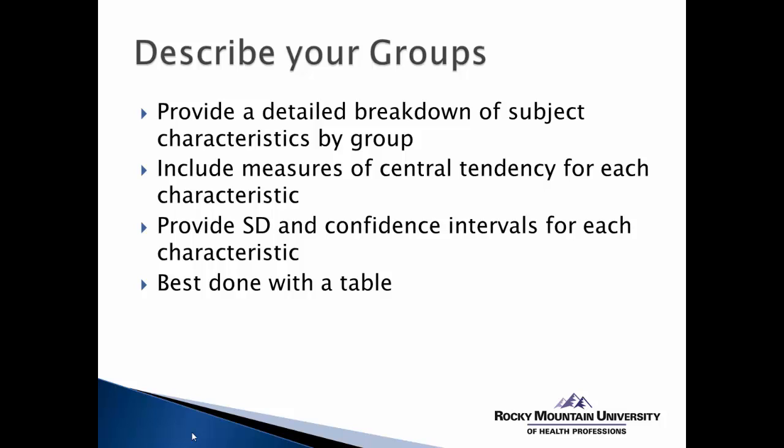For example, for age, that would probably be the mean or maybe the median. For the breakdown of gender, that might be a percentage or it might be the mode. So it's going to depend on what type of characteristic you're dealing with. It's also important to provide measures of variance for each of these characteristics — standard deviation or possibly standard error — and also confidence intervals for each of these characteristics, if appropriate.